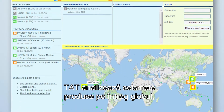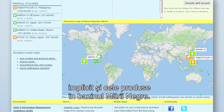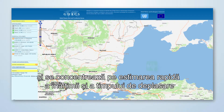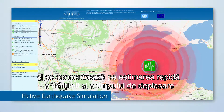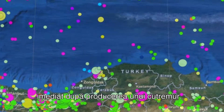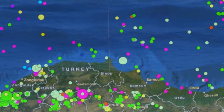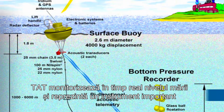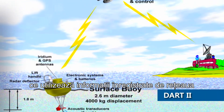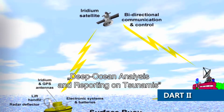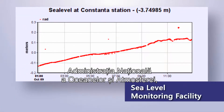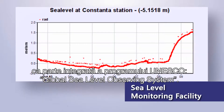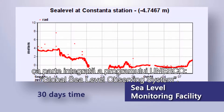TAT analyzes seismic events in the Black Sea and worldwide. It is part of the Global Disaster Alert and Coordination System and estimates the height and transmission time of a possible tsunami wave within just a few minutes after detection of an earthquake. TAT registers sea levels in real-time using information from the DART Network, the National Oceanic and Atmospheric Administration, and the Sea Level Monitoring Facility within UNESCO's Global Sea Level Observing System.